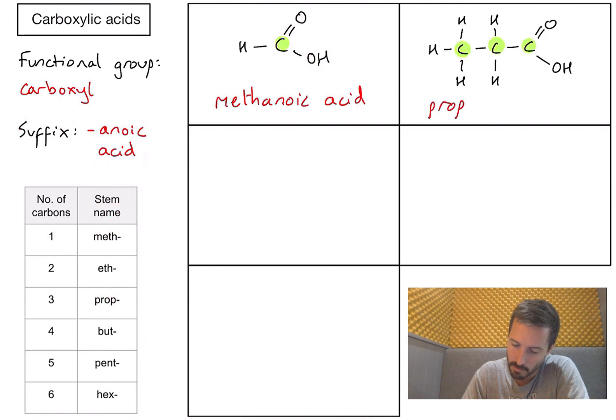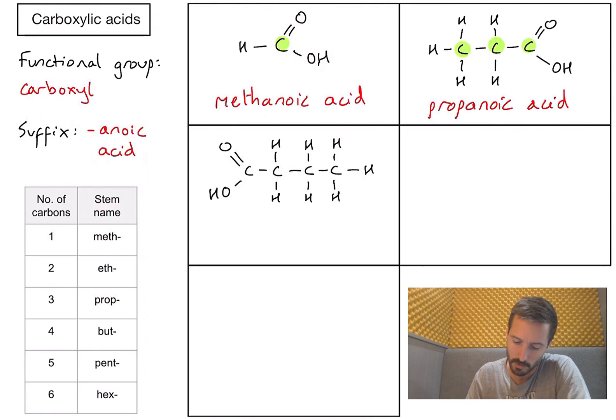Third one. Again, doesn't matter that I've drawn the carboxyl functional group this time on the left hand side of my molecule, it's still technically the first carbon so I don't need any numbers. How many carbons are in my main chain? I've got one, two, three, four. That's going to relate to the stem name but. So if I write that down and add my suffix, I've got in this case butanoic acid. Nice and easy.